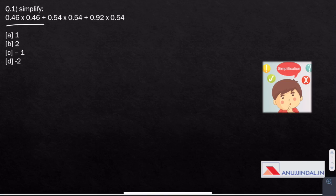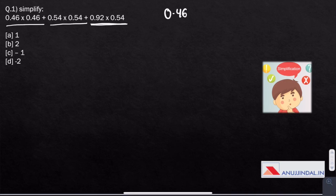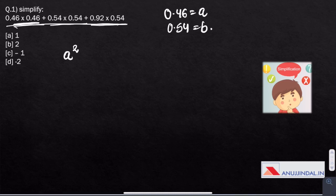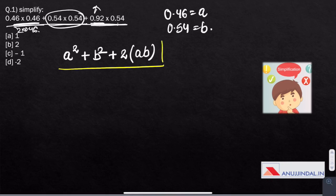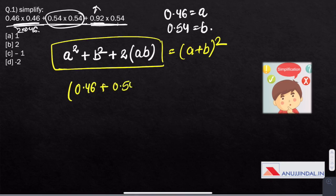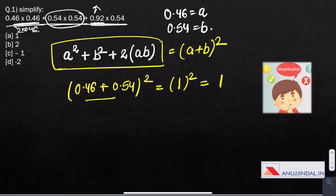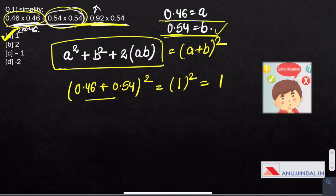Question 1. Simplify 0.46 multiplied by 0.46 plus 0.54 multiplied by 0.54 plus 0.92 multiplied by 0.54. Let us say 0.46 is A, 0.54 is B. From this given equation, you could see that A square plus B square plus 0.92, which is 2 times 0.46. This is nothing but A plus B whole square. A is 0.46, B is 0.54 whole square. When we add them, we get 1 square equals 1. So answer is A.